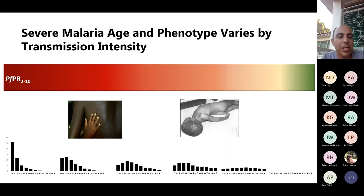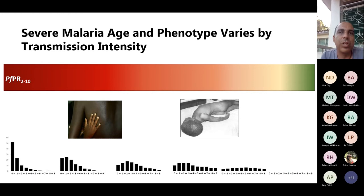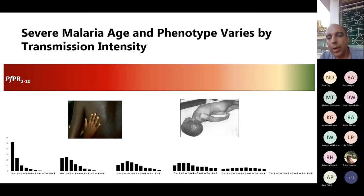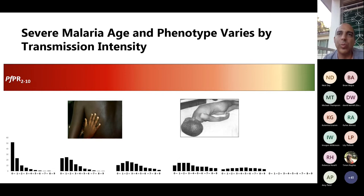Along the bottom, histograms show the age distributions of children admitted to hospital. At the far left there's a large peak in the zero-to-one age group; moving right, that distribution flattens. This long-established observation shows that at higher malaria transmission, presentations tend to be in younger children, while as malaria goes down, older children present. This makes sense because with malaria exposure, children become immune, so as they get older they get less malaria — an effect less marked at high transmission intensity.